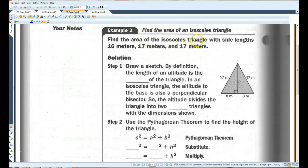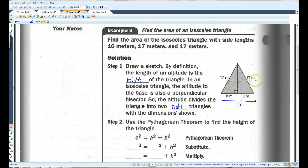Find the area of the isosceles triangle with side lengths 16 meters, 17 meters, and 17 meters. So, they've drawn a sketch for us. By definition, the length of an altitude is the height of the triangle. In an isosceles triangle, the altitude to the base is also a perpendicular bisector. So, the altitude divides the triangle into two right triangles with the dimensions shown. We have a side of 16, 17, and 17. This altitude divides this side into 8 and 8 because it's an isosceles triangle.